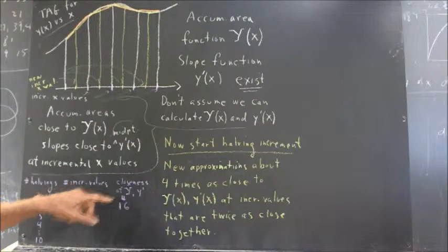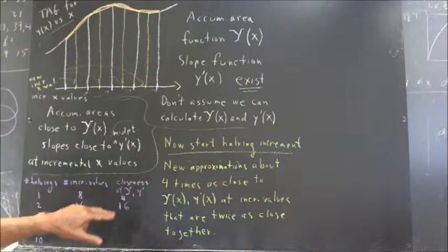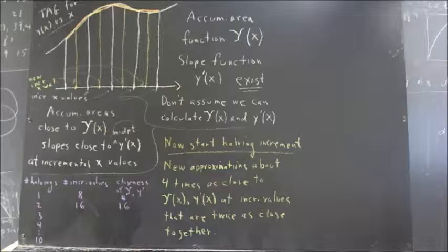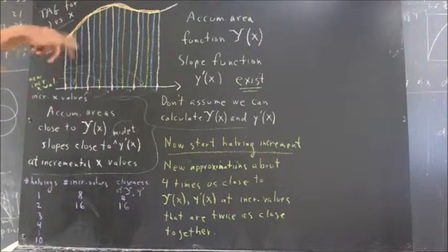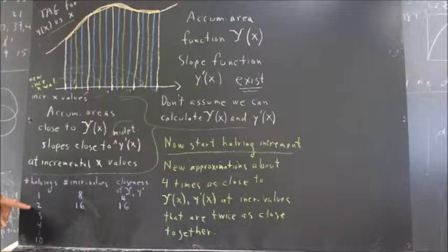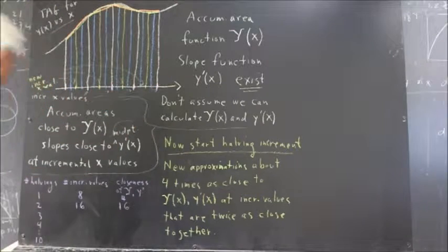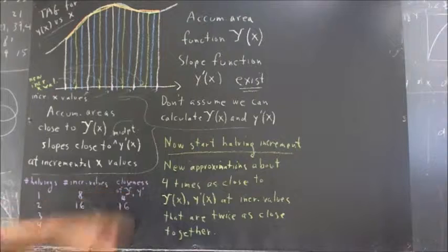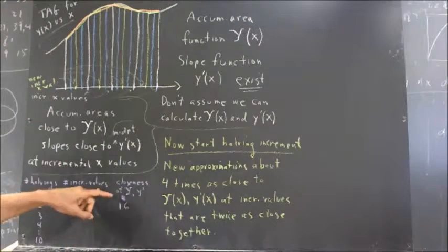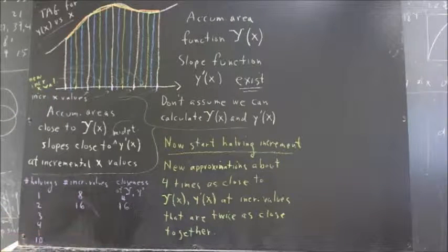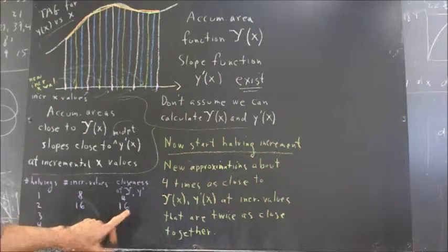Every time we halve the increment, we get four times as close to the actual values. So if we halve the increment once more — doing two halvings — now there are 16 points, because every time we halve the increment we get twice as many points. So now there are 16 incremental values on the x-axis. The closeness: it got four times as close the first time we halved, and four times closer again with this halving — so 16 times as close. We have 16 incremental values and our approximations are 16 times as close.